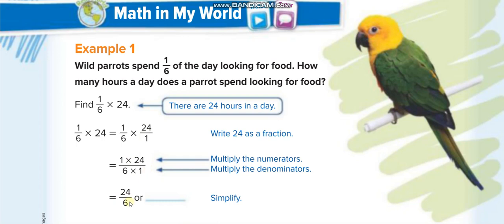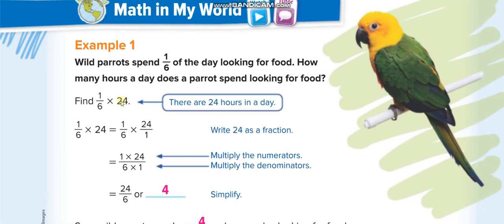Okay, 24 over 6, then we simplify it. How many 6 you can take out of 24? Or you can divide it. 24 divided by 6 equals 4. Okay, this is when you change the whole number into a fraction by writing 1 in the denominator.